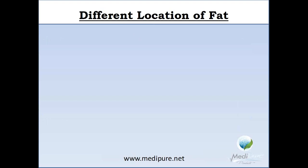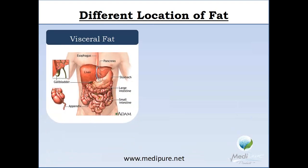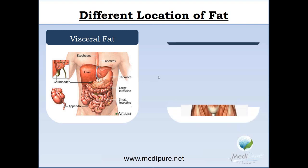I want to discuss today a little bit about different locations of fat and how they affect our health. First, I want to outline what visceral fat is. The viscerals refer to the organs, and visceral fat is the fat surrounding the organs. Visceral fat plays an important role, just like other fat does in our body, and is found within the abdominal cavity.